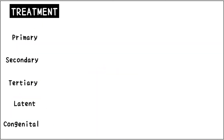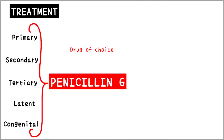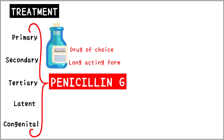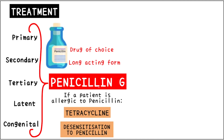For the treatment of syphilis, all forms respond to one single drug — the most famous antibiotic, i.e. penicillin. Penicillin G is the drug of choice and usually the long-acting form of the medicine is used, administered intramuscularly. If a person is allergic to penicillin, tetracycline is an alternative, but it does not work as effectively against the treponemes. In such cases, we have to desensitize the patient to penicillin and follow the same course of treatment.